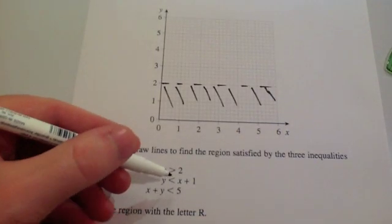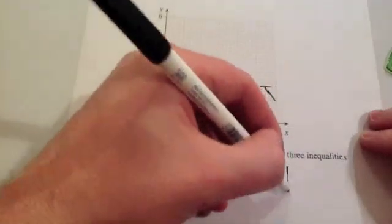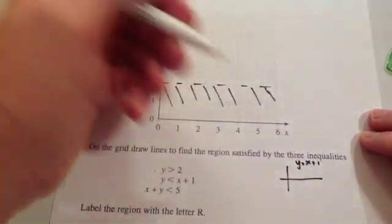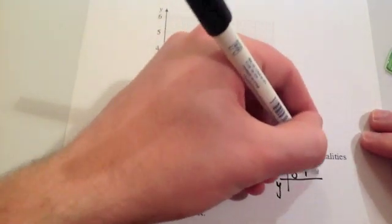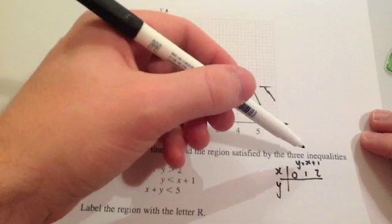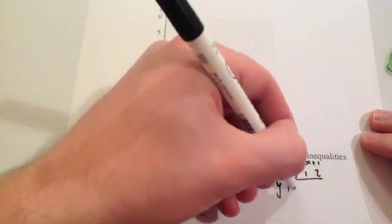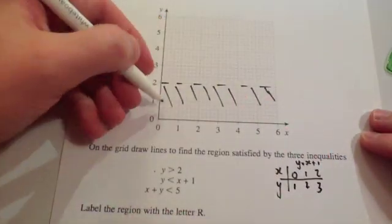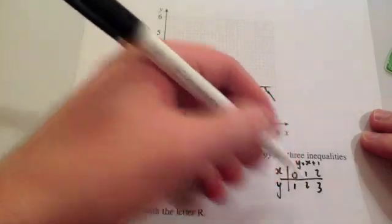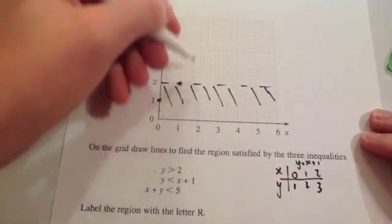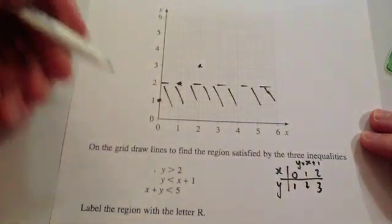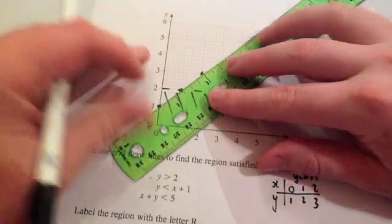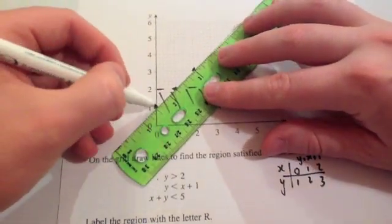The next inequality: y is less than x plus one. Draw a little x-y table and draw the graph y equals x plus one. For x values zero, one, two, y equals one, two, three respectively. Plot these points: (0,1), (1,2), and (2,3). Because this is just 'less than', it's going to be a broken line, so draw a broken line through these points.